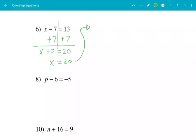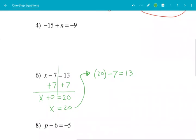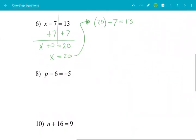Let's check our work real quick. If X is 20, 20 minus seven should equal 13. And that's exactly right. 20 minus seven is 13. 13 equals 13. So my equation is still true.